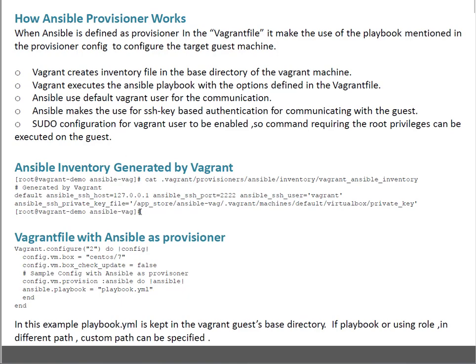This is a sample of how the Vagrant inventory file looks like when you run vagrant up. You can see the path — I am in the Ansible guest directory and the path is dot vagrant, provisioners, ansible, inventory, vagrant_ansible_inventory. This is the file. You can see it is using the loopback IP and the custom port 2222.